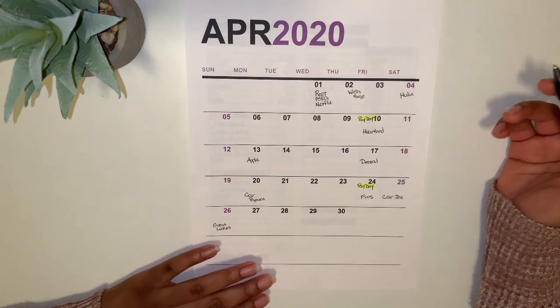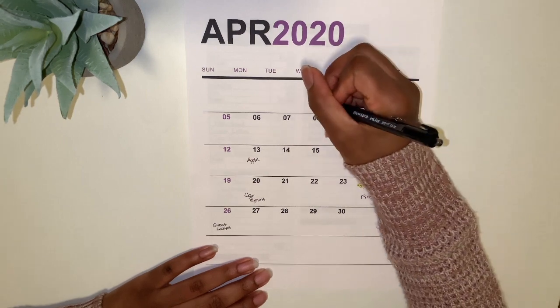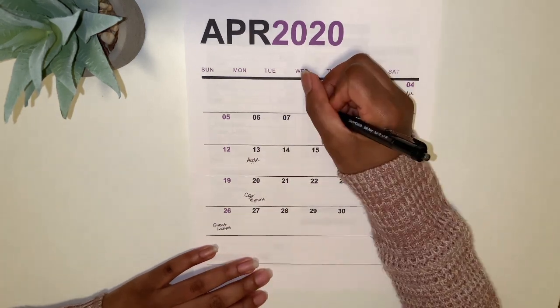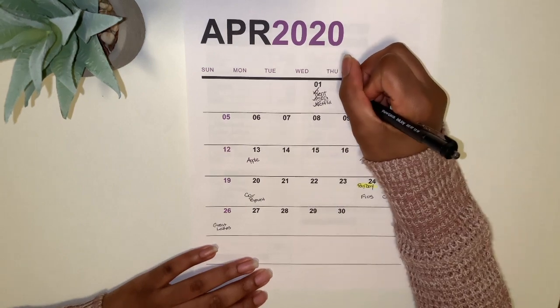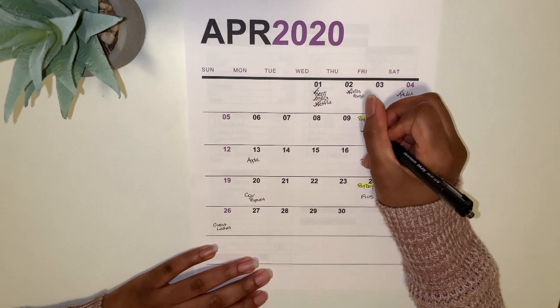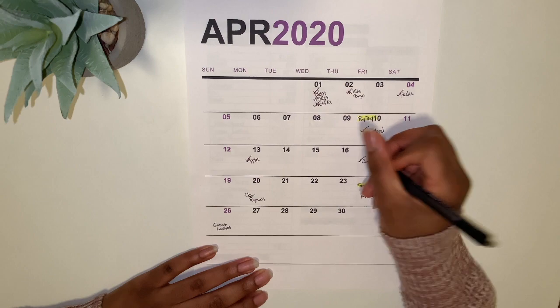First we have rent and rent was paid, so that's a check. PSE&G was paid, that's check. Netflix paid, Wells Fargo got paid, Hulu got paid, paid, paid. My Heartland Apple took their money and I paid dental. So that's good, all the bills are covered from this week.